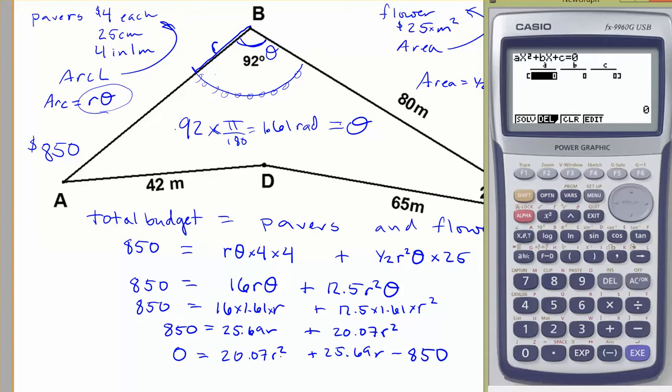And you'll notice here that it's saying for something x² plus something x plus some number. That's why we've rearranged it to be something r² plus something r plus some number. So let's put these in. 20.07 goes into the first spot, 25.69 goes into the second spot, and that's a negative 850. So make sure you get the negative there.